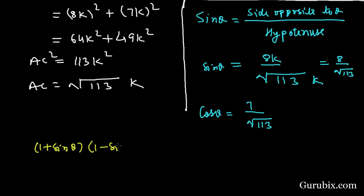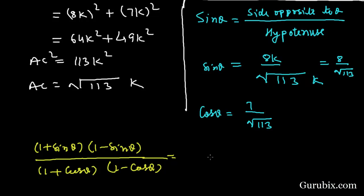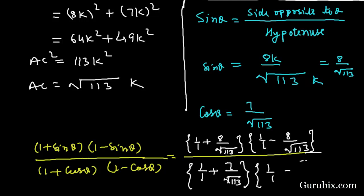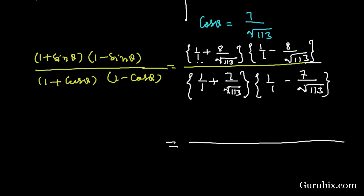Now we find the value of (1 + sin θ)(1 − sin θ) over (1 + cos θ)(1 − cos θ) by substituting the values. We apply the identity (a + b)(a − b) = a² − b², giving us (1 − sin²θ) over (1 − cos²θ), which equals 1 − 64/113 over 1 − 49/113.